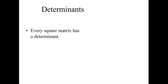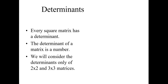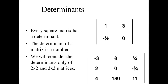Every square matrix has a determinant. The determinant of a matrix is a number — when you solve a determinant you will only be left with one answer, which will be a number. We will consider determinants only of square matrices, meaning either 2 by 2 matrices or 3 by 3 matrices. A determinant is represented by a vertical line, so this vertical line represents the determinant.